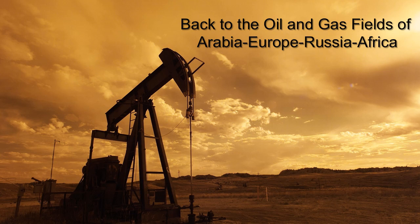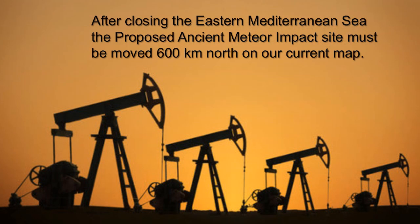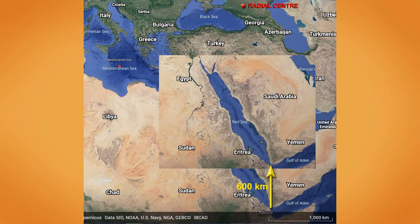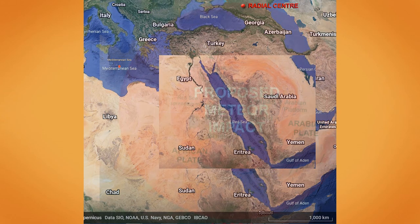Let's now return to the spatial and temporal distribution of oil and gas in Arabia, Europe, Russia, and Africa. We have seen that by closing the Black Sea, the radial center in eastern Turkey moves 600 kilometers to the north into southern Russia. After closing the eastern Mediterranean Sea, we must move the proposed ancient meteor impact site, centered on the Red Sea, 600 kilometers to the north as well. Moving the Red Sea meteor impact site 600 kilometers to the north means the Chicxulub templates will move 600 kilometers to the north as well.